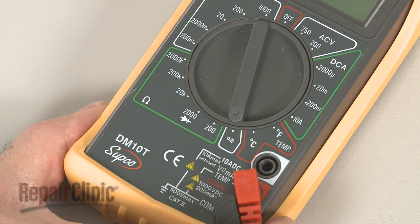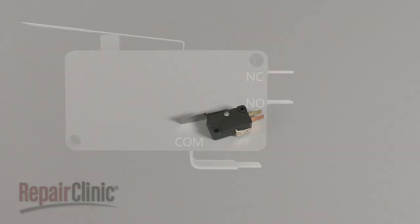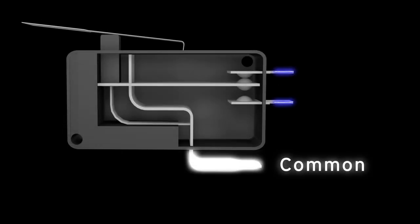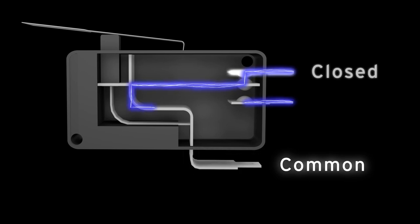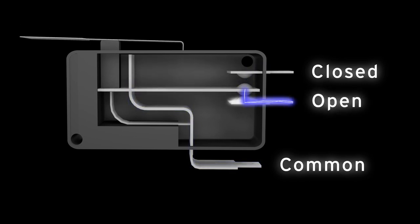Before you begin, make sure the switch you're testing has been removed or isolated from the appliance. Three terminal switches will have a common terminal, a normally closed terminal that provides continuity before the switch is actuated, and a normally open terminal that provides continuity after the switch is actuated.